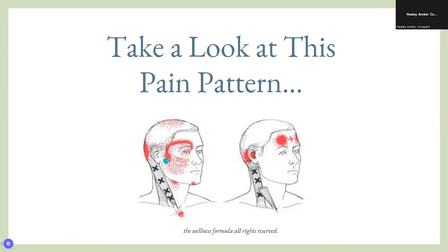Trigger points in the SCM muscle can cause these red pain patterns — there's quite a strong mark right in front of the ear, right at the jaw joint. That pain can also go across the forehead above the eye, giving a migraine-style headache. It can cause a headache at the back of the head. Looking at the other image, this muscle can actually refer pain into the ear — some clients feel like they have an ear infection or even hearing loss — and it can cause ear ringing as well.